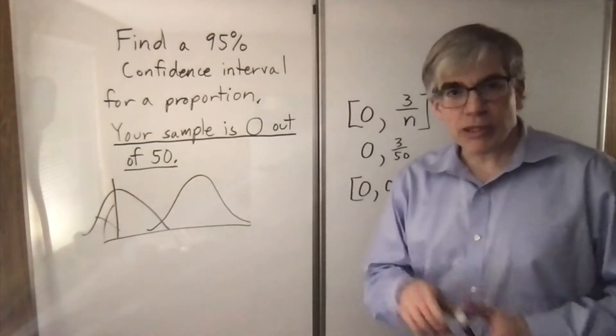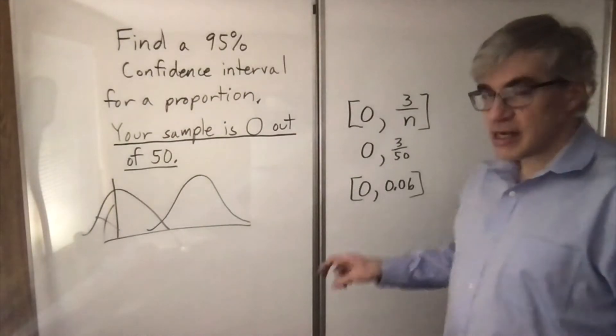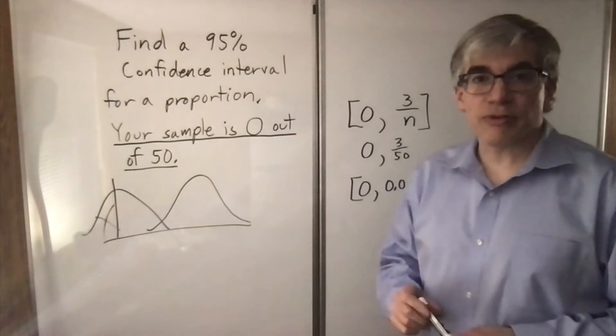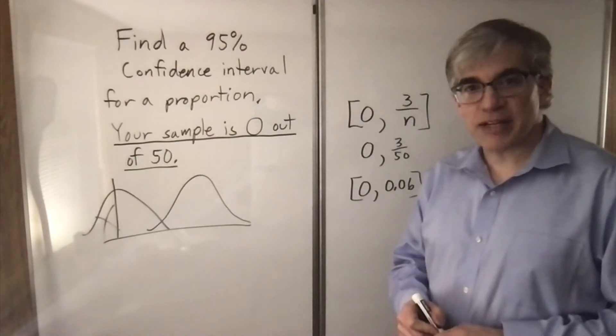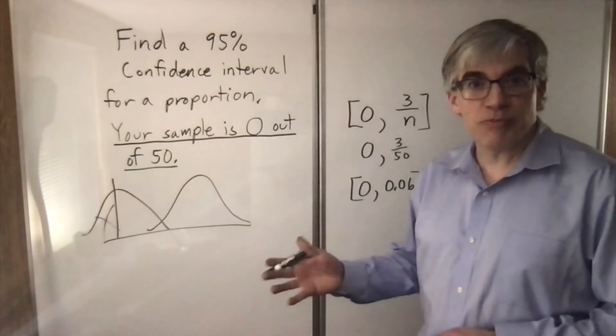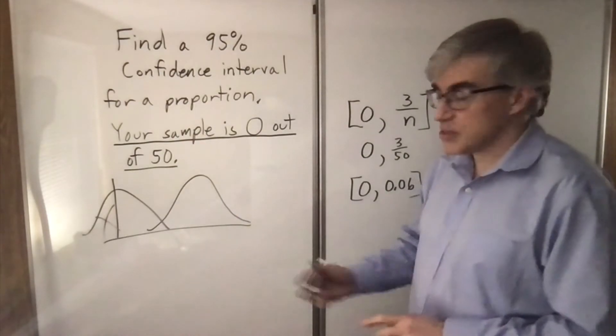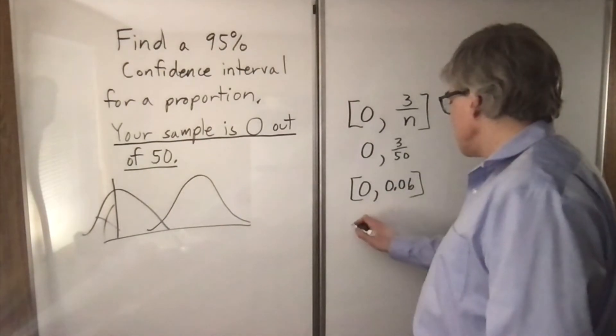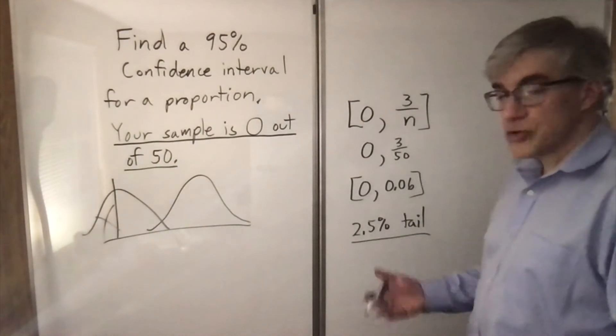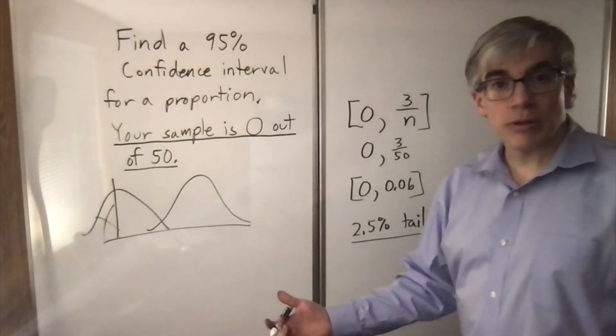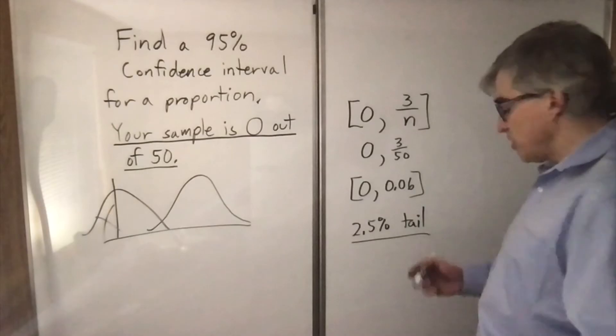Now there's a weird little caveat on that. The people who came up with this rule said a 95% confidence interval, but they meant the upper tail was 2.5%. So really it's like 97.5%. Yet they call it 95%. So you need to watch out for that. There's a 2.5% tail. And clearly it's a single tail distribution because you can't go below zero.